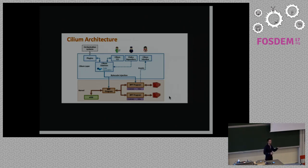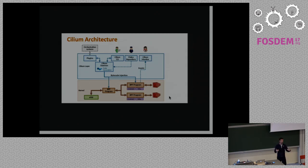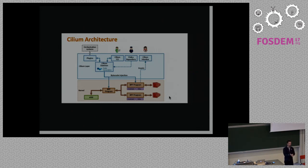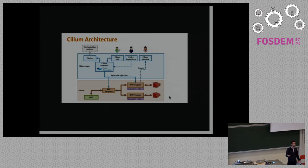As Daniel mentioned, the structure of the ring buffer is up to us to define — we define the actual metadata provided. The current implementation includes: the container ID the packet was sent from, all labels attached to it, the container receiving it, the packet length, and the first 64 bytes of the packet. All this information is not visible if you use something like tcpdump or the kernel's SKB drop monitor. We can provide much more metadata to help you debug and troubleshoot your network.